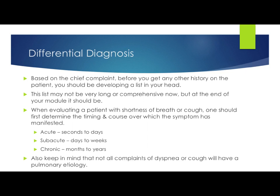Keep in mind that not all complaints of dyspnea or cough are going to have a pulmonary etiology. Sometimes you'll exhaust all your differentials, give them medications, it's not getting better, and you have to start thinking outside the box. You might determine that the patient has a cough because they have gastroesophageal reflux — GERD — and the acid is coming up and triggering the cough.